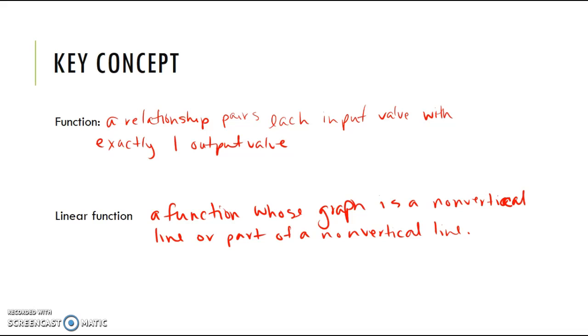So, function: for each input there is exactly one output, otherwise it's not a function. One way to remember that is the input values cannot cheat on the output values. And a function whose graph is a non-vertical line or part of a non-vertical line is our linear function.